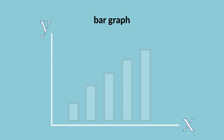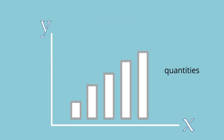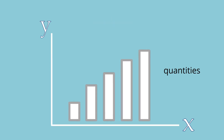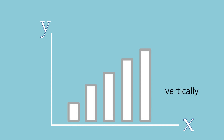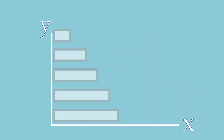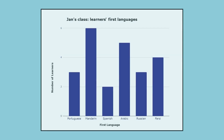A bar graph is used to compare data. The bars represent quantities and can be displayed vertically or horizontally. This bar graph shows learners' first languages in Jen's class.